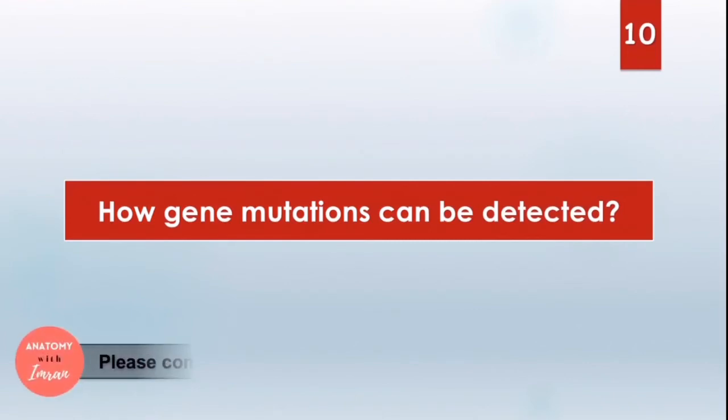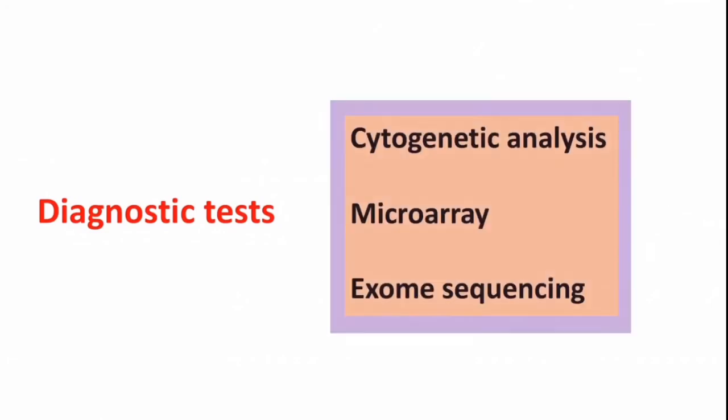Next question is, how mutation can be detected? First we have to analyze the clinical findings. Then we have to go through pedigree analysis. After pedigree analysis, we will have a general idea of what might be the cause of mutation or what type of mutation, then we will do the diagnostic testings.